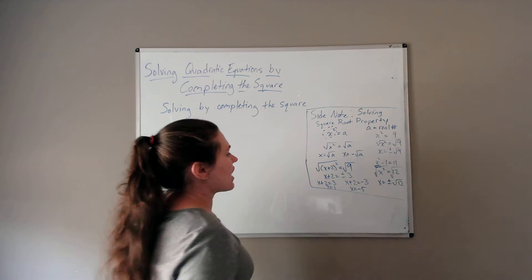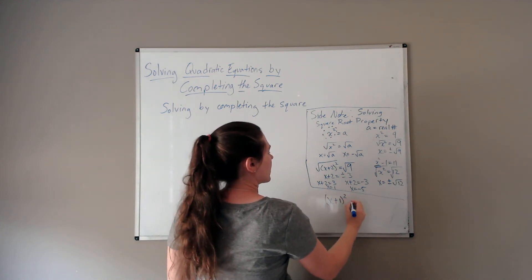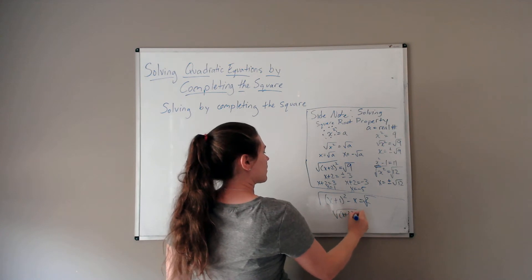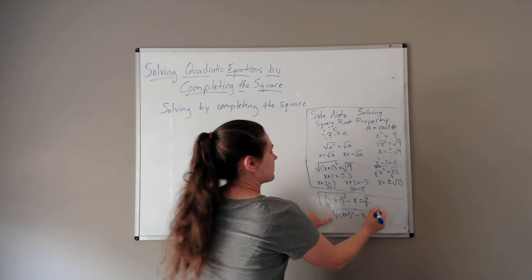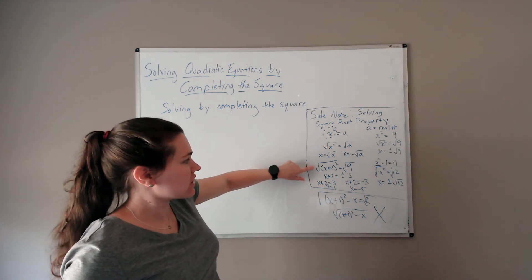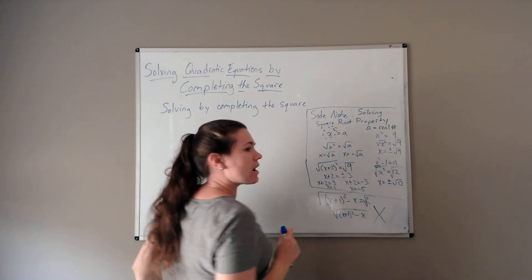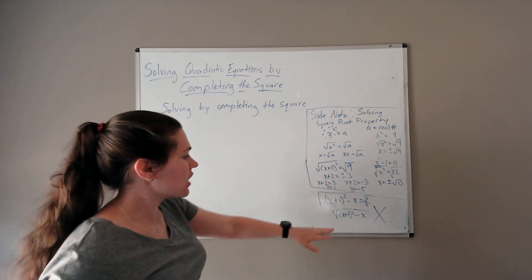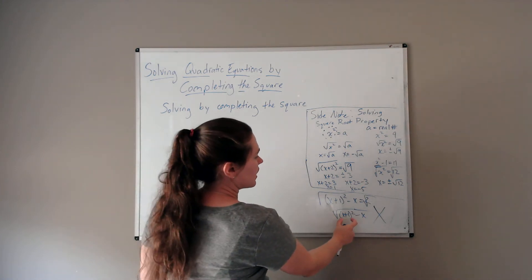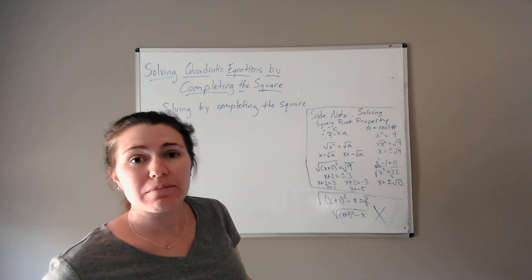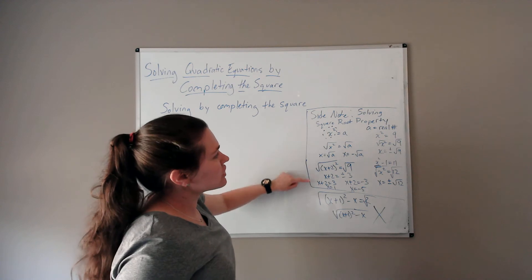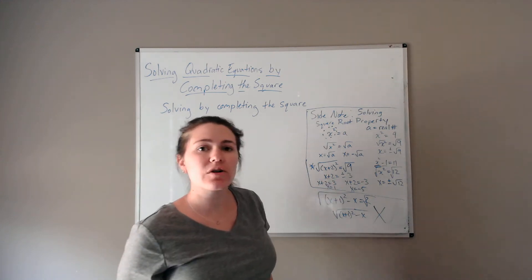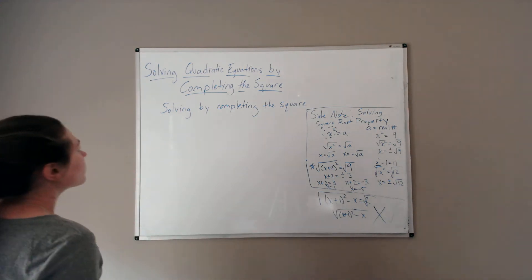You can only use the square root property when you have no other variables outside the quantity being squared, and it's set equal to a constant. For example, x plus 1 squared minus x equals 2 — you cannot take the square root here because there's an x outside, and the square root of that entire expression can't be simplified. The square root and the power of 2 only undo each other when all variables are inside the squared expression. Since the square of a binomial fits this requirement, we can use the square root property to solve by completing the square.